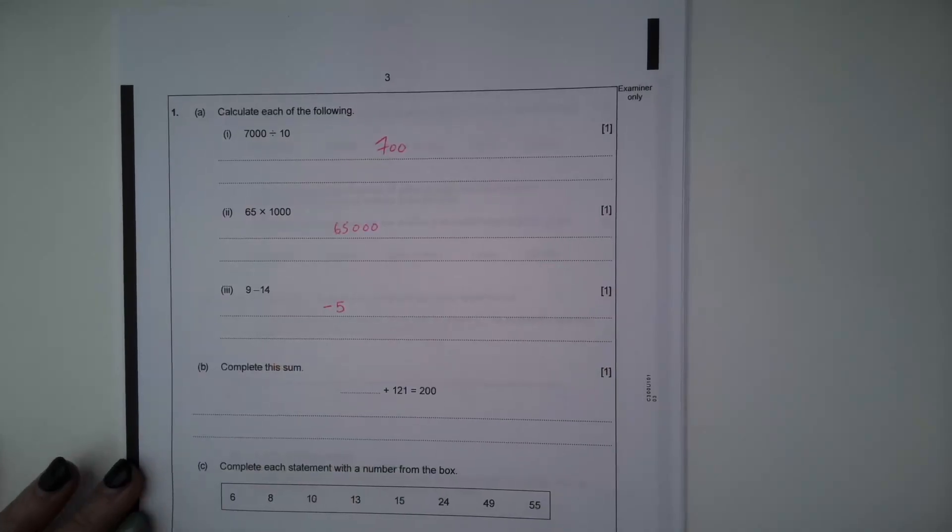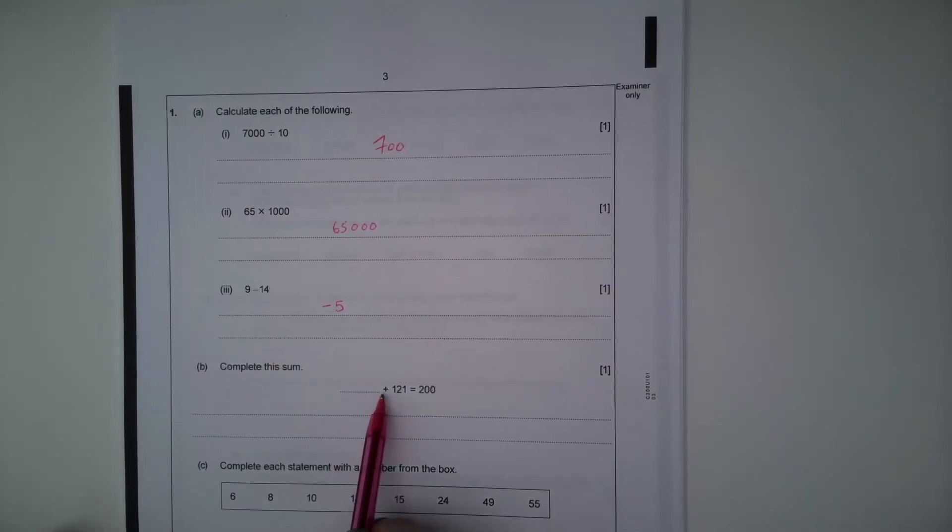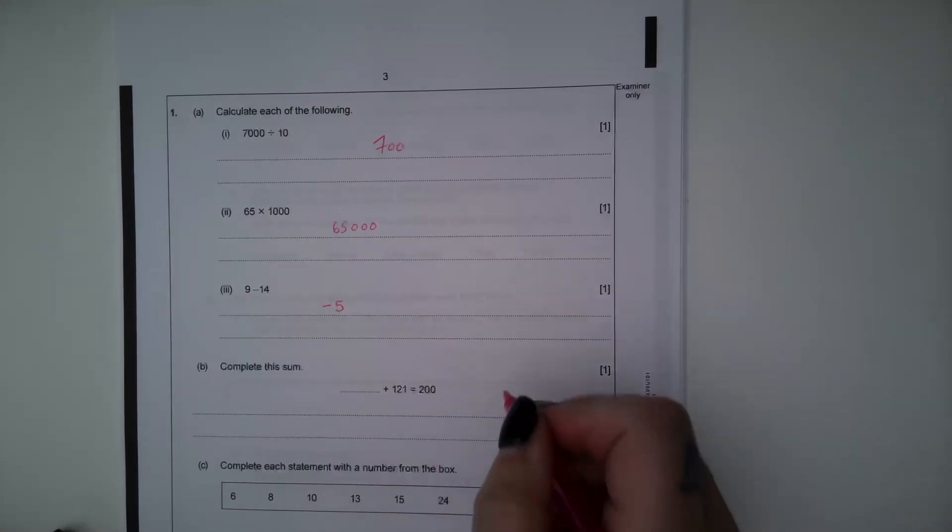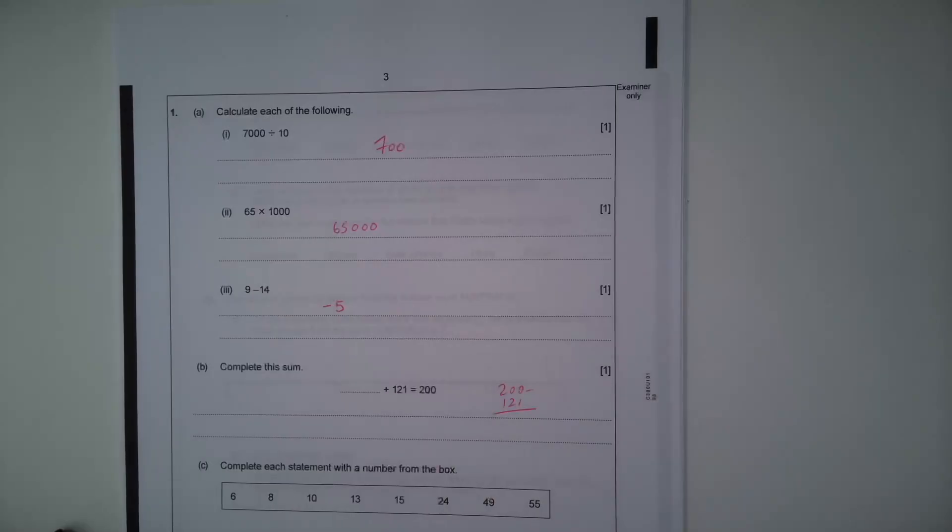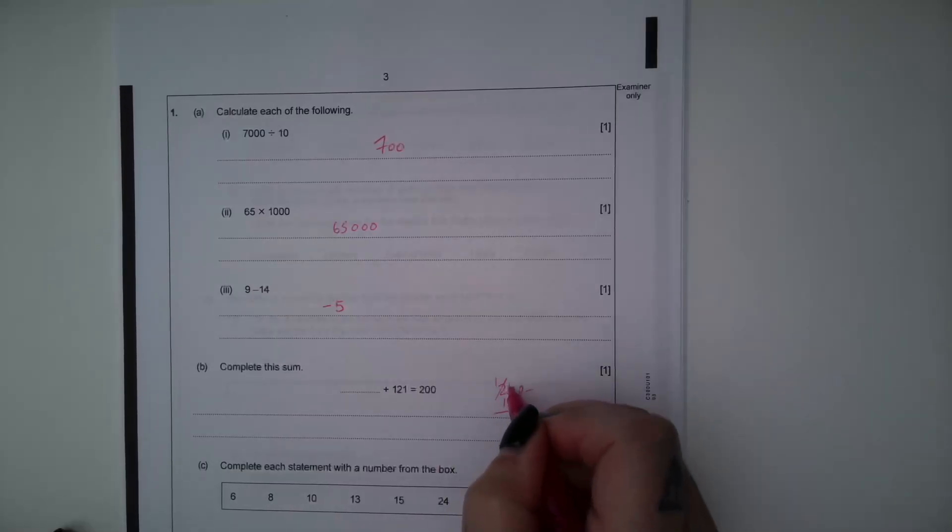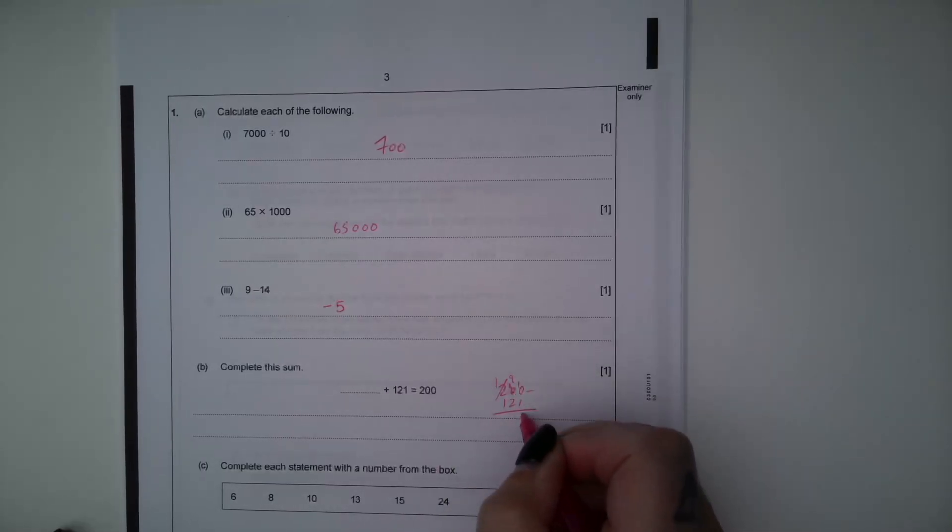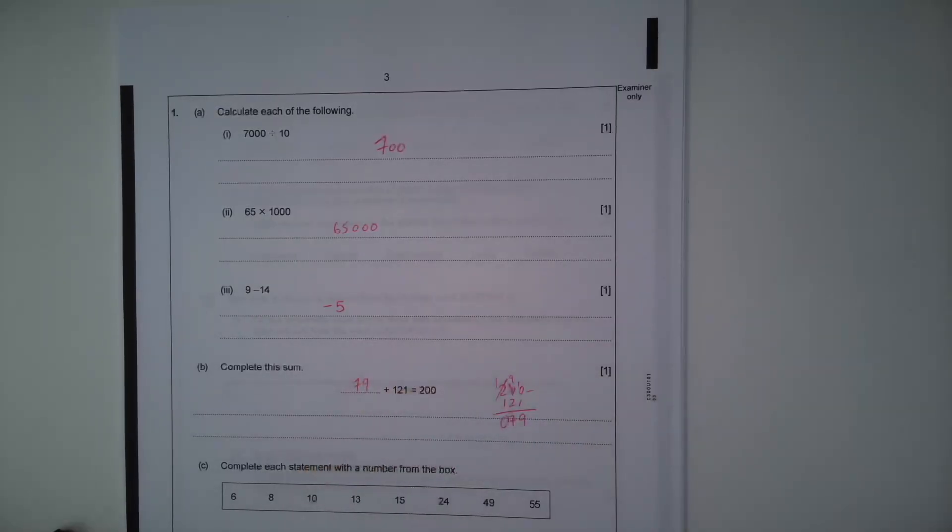Part B, complete this sum. Something add 121 equals 200. So if I do 200 subtract 121, it will tell me that missing value. So it should be 79.